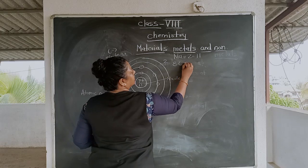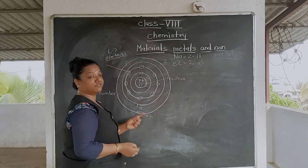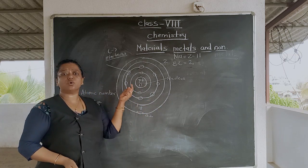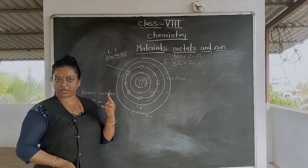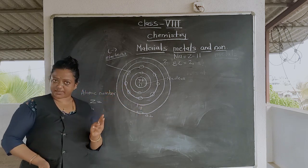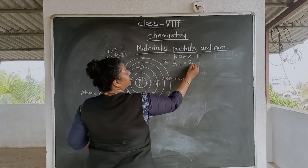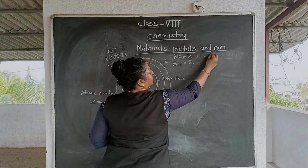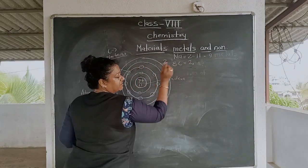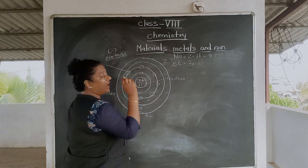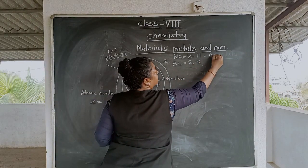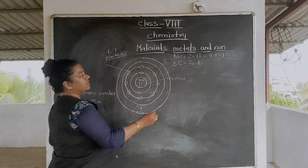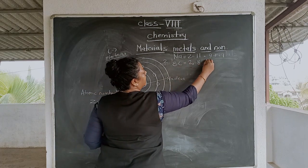In the first shell, the capacity is always two electrons, not more than two. So two electrons fill the first shell. That leaves nine remaining. In the second shell, eight electrons go. Nine minus eight leaves one. So one electron remains in the outermost shell. Therefore, the electronic configuration of sodium is 2, 8, 1.